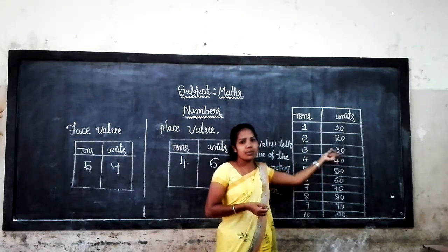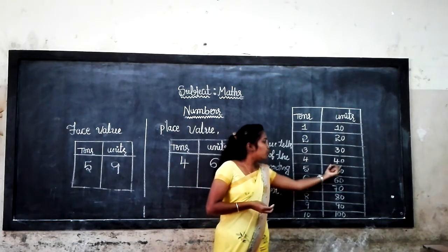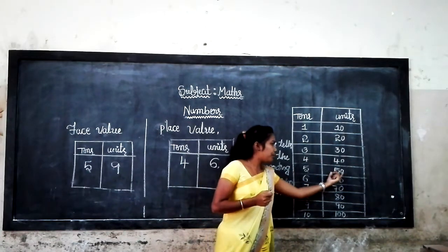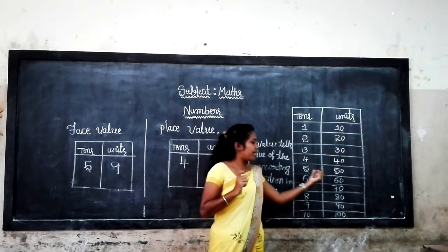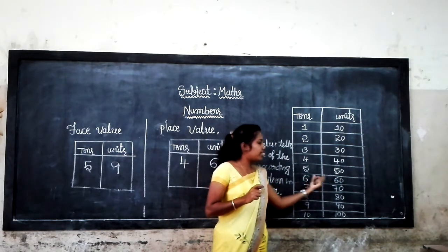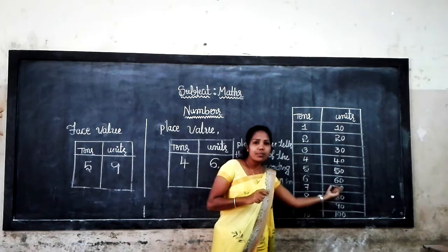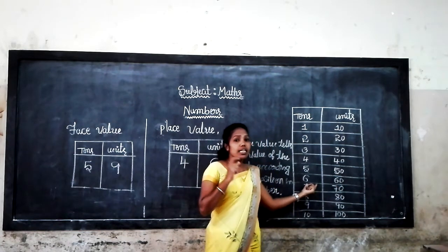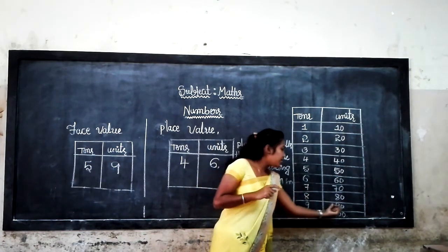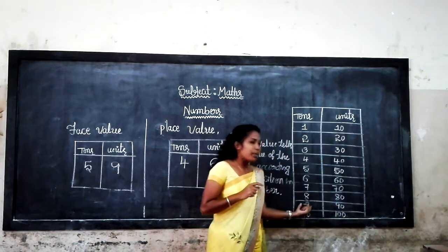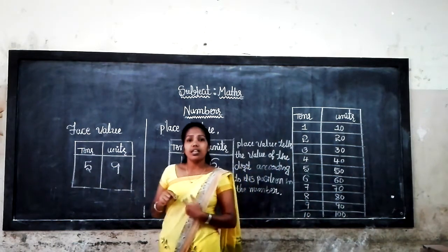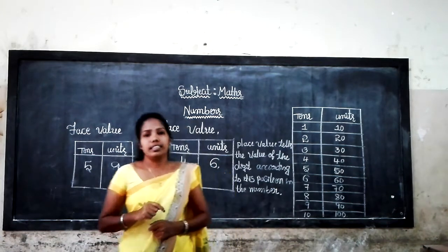30 units make 3 tens. 40 units make 4 tens. 50 units make 5 tens. 60 units make 6 tens. 70 units make 7 tens. 80 units make 8 tens. 90 units make 9 tens.